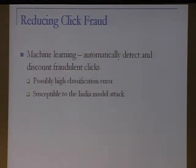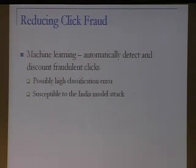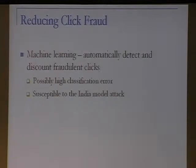How can we combat this fraud? One main technique, assumed in academic literature, is machine learning — automatically detecting and discounting frauds, double-checked by humans. These techniques are somewhat successful, but have possibly high classification error. They're also quite susceptible to the 'India model' attack, because it's rather difficult to distinguish between a human committing fraud and a human genuinely shopping online — it's possible, but they look pretty similar.